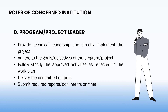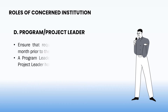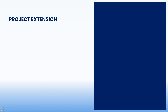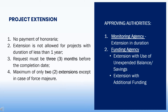The program or project leader shall have the following responsibilities. In cases of project extension, the following should be noted: no payment of honoraria, restriction from extension for projects with less than one year duration, requests must be made no later than three months before the completion date, and a maximum of only two extensions except for force majeure. For extension in duration, the approving authority falls under the monitoring agency, while the funding agency handles extensions involving use of unexpended balance or savings, and extensions with additional funding.